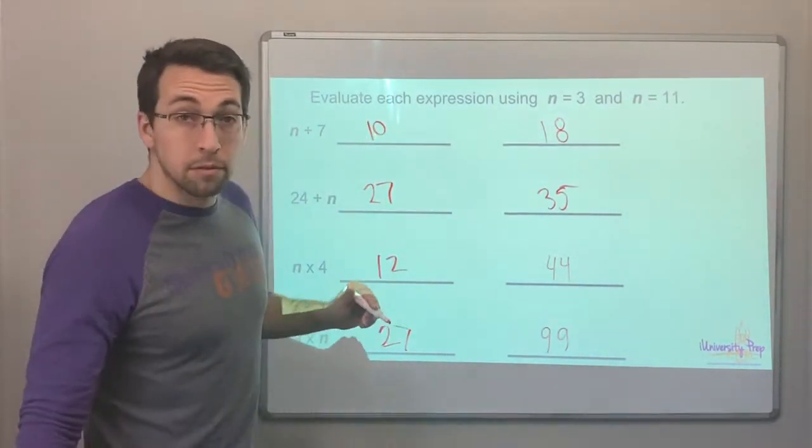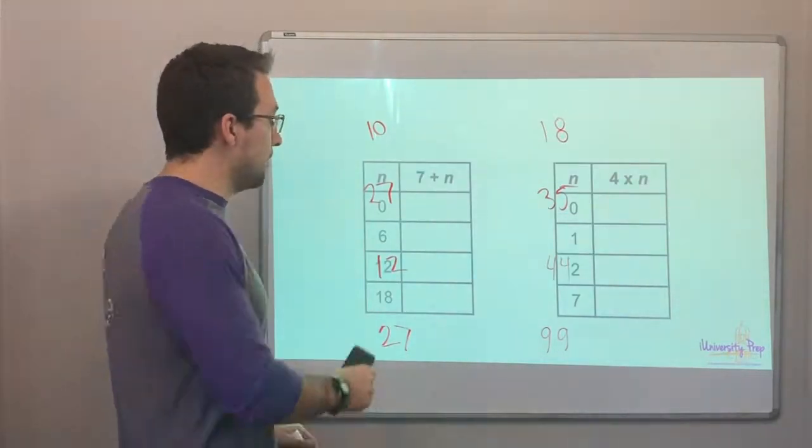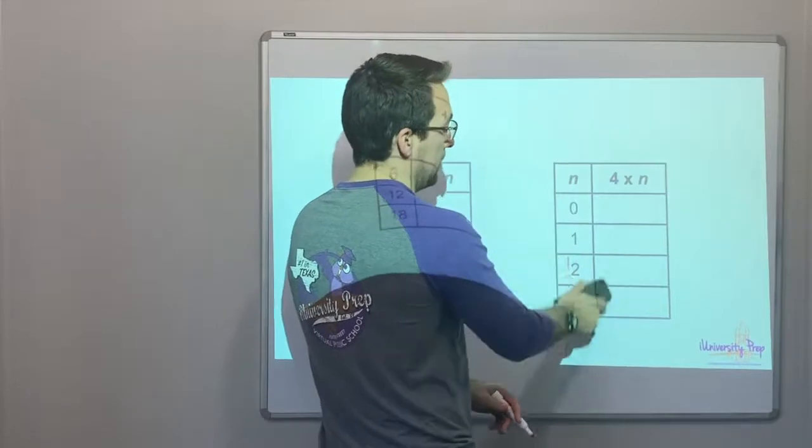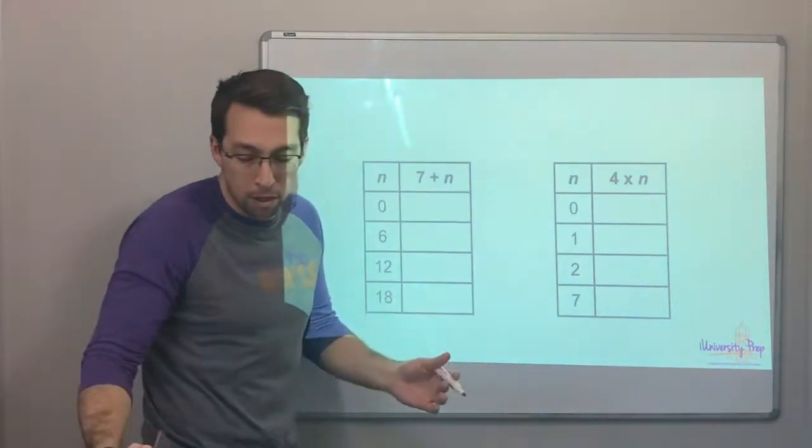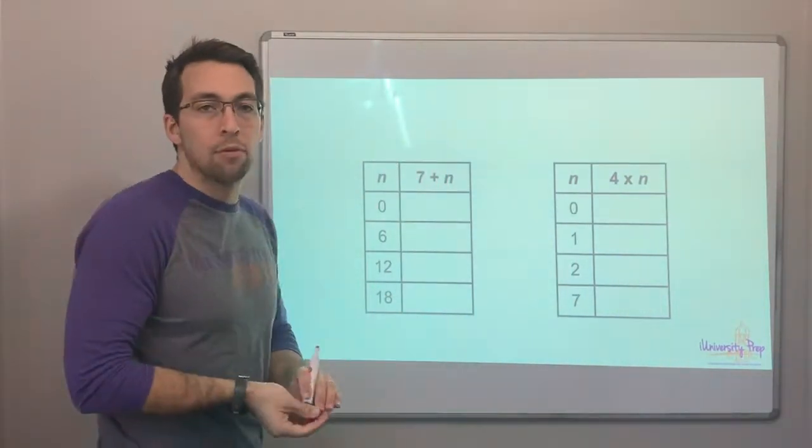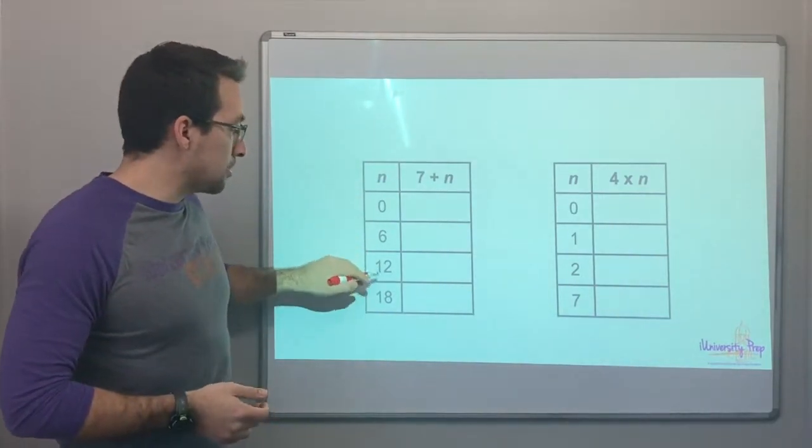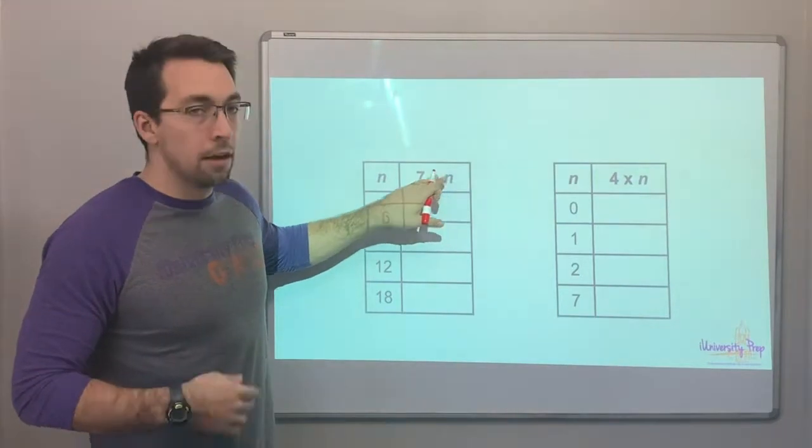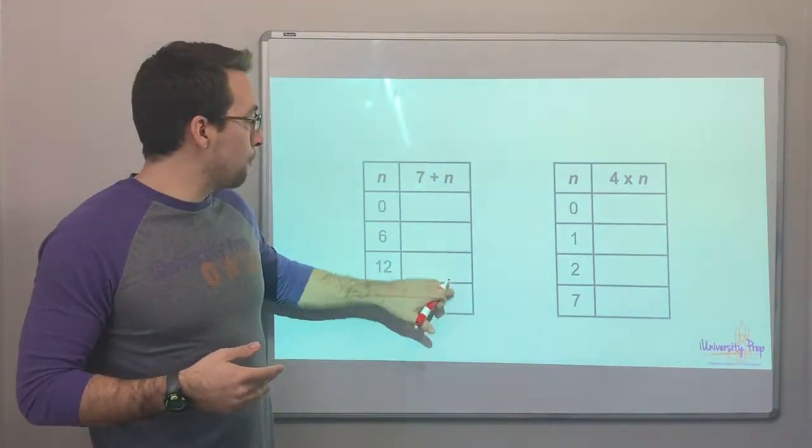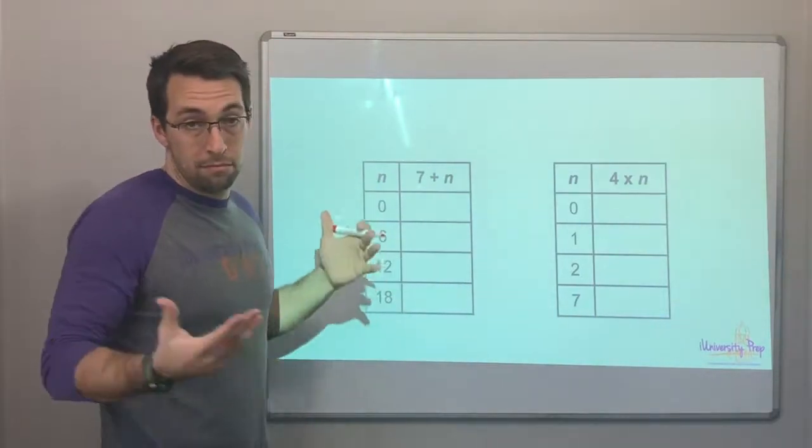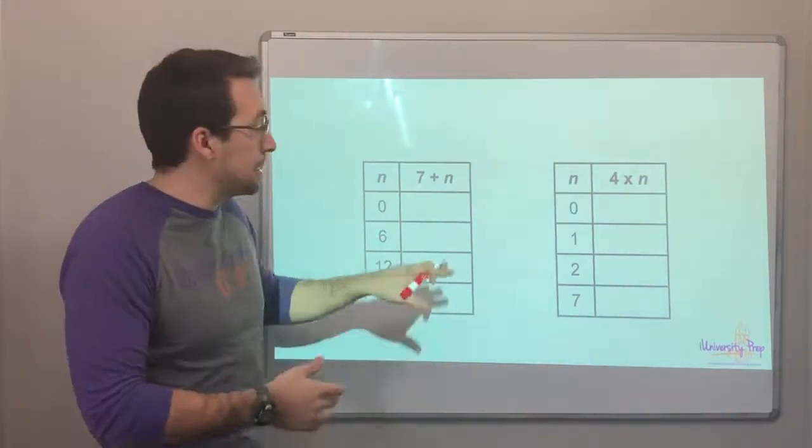So now let's look at our tables. Same thing, right? So we have a value for n, and then we have a formula that governs the table. These are given values of n: 0, 6, 12, 18, and then we have a formula of how to solve for this missing variable, this missing answer, this missing data.